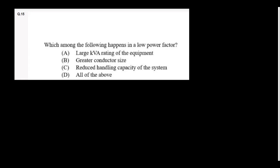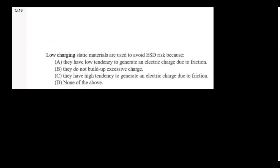Which among the following happens in a low power factor? If there is low power factor, then bigger conductor size is required, large kVA rating is required. That means all of the above. Low charging static materials are used to avoid ESD risk because they have low tendency to generate an electric charge due to friction. Option A is the right answer.